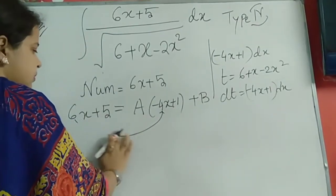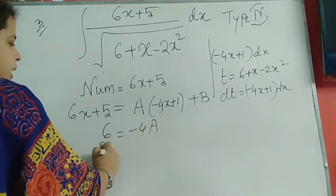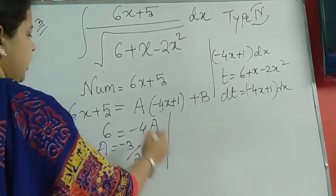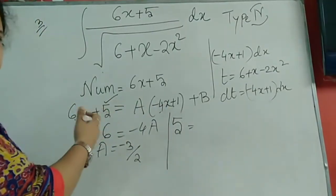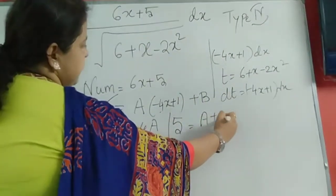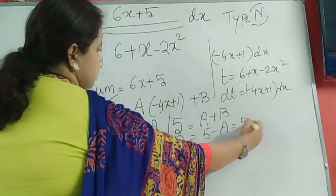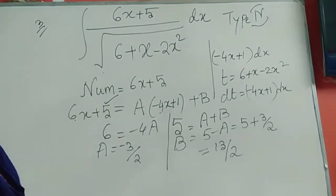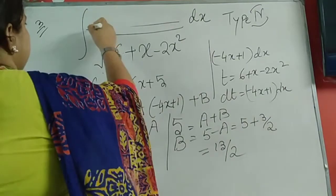The numerator is 6x plus 5, and I am writing it as a(minus 4x plus 1) + b. This is important — please focus. I am getting (minus 4x plus 1) from the derivative of the denominator. By equating the coefficients of x: on the left it is 6, on the right it is minus 4a, so a = minus 3 by 2.